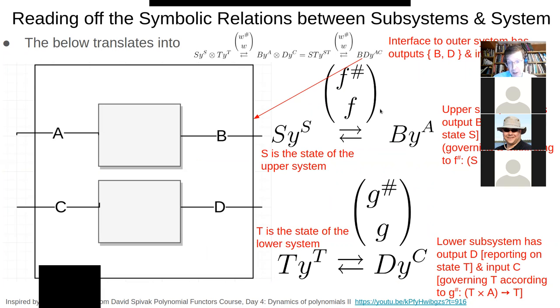And then we tensor the right-hand sides, these guys. B Y to the A tensor D Y to the C. And just taking this, that turns into S T Y to the S T. In short, the state space of this entire diagram, encompassing both of these, is just a product of the state space of these diagrams within it.